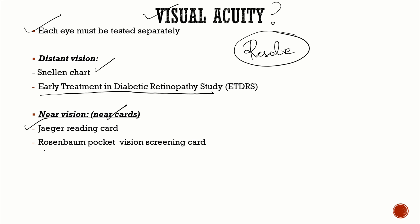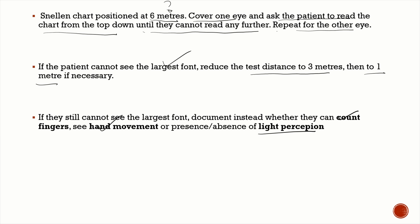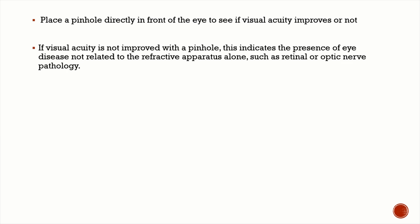The clinical method: place the Snellen chart six meters away from the patient, because at this distance accommodation is relaxed and most rays are parallel. Cover one eye and ask the patient to read from top to bottom until they can't read further, then repeat for the other eye. If they can't see the largest font, reduce to three meters, then one meter. If still unable, document as finger counting, hand movements, or absent/present light perception.